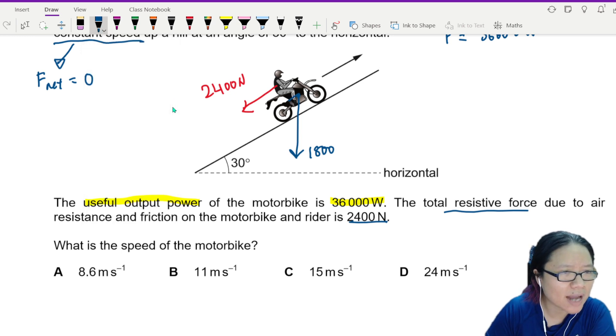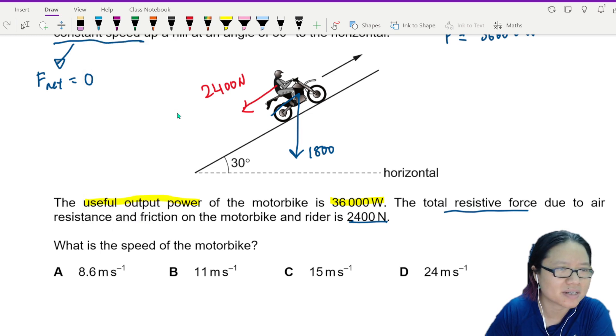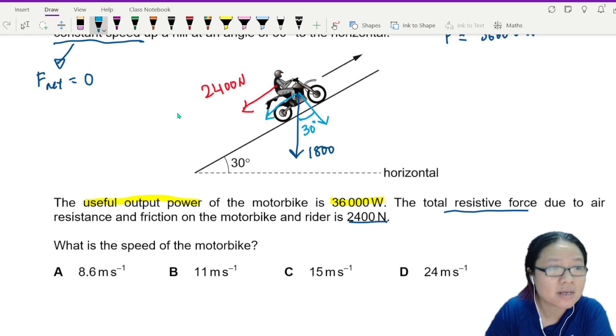There are two things that is trying to drag my friend down the slope. There is air resistance that is opposing its direction of motion. And then there is this weight component. So if we resolve this, and if you don't know how to resolve this, go check out the lecture videos where we talk about the inclined plane. Here, the weight component will be 1800 sin 30.